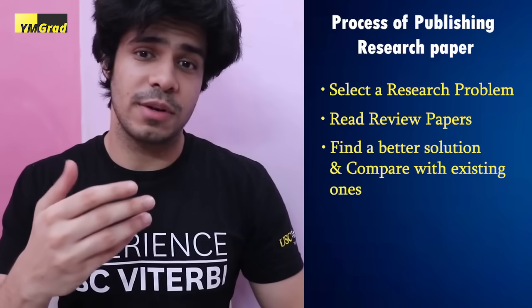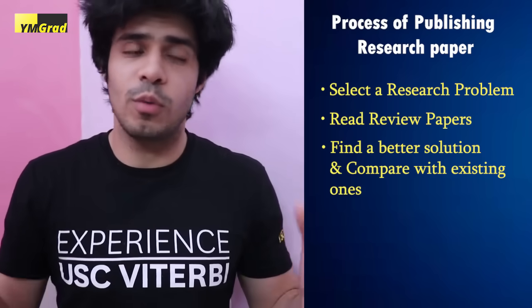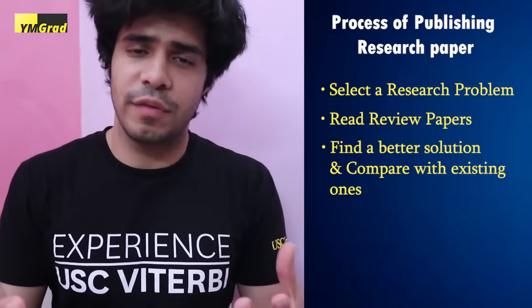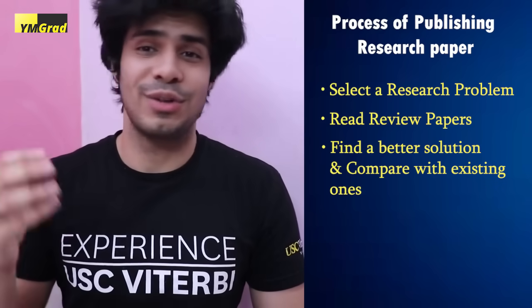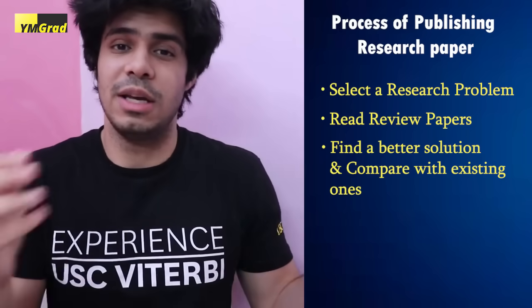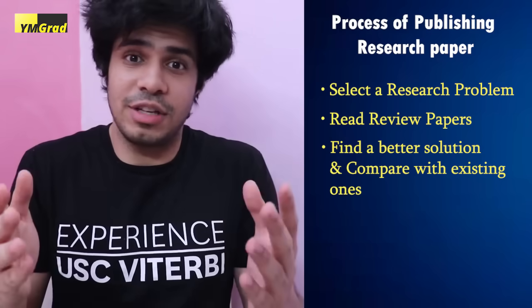Step three is to find a better solution. Compare your approach with all the other solutions out there, running analysis based on whatever efficiency measures are relevant to your scenario. For example, after reading many papers you might realize you can merge two approaches — author one from paper one was doing this, author two from paper two was doing that — and merging them makes the process more efficient. Once you can compare and contrast your solution with existing published work, you officially have a research paper candidate.